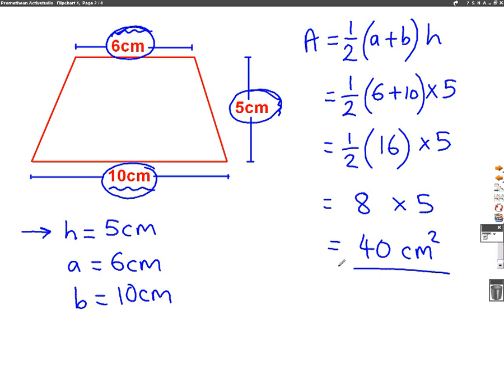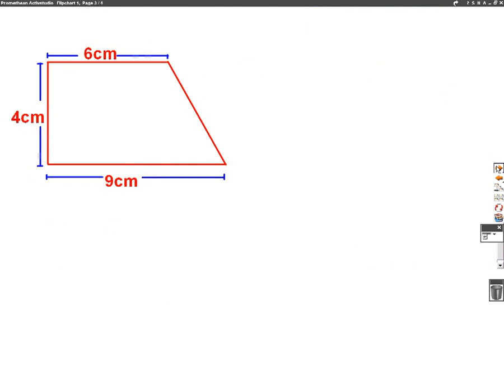Right, so we've gone through one example. And you can see that this formula here is what we need to use. And our job is just to work out what A, B and H are and put that into the formula. I just want to do one more example. I've noticed in exam questions, they tend to use a trapezium that looks like this.